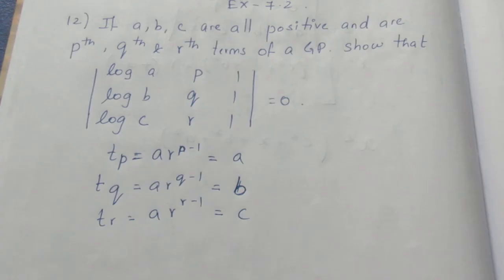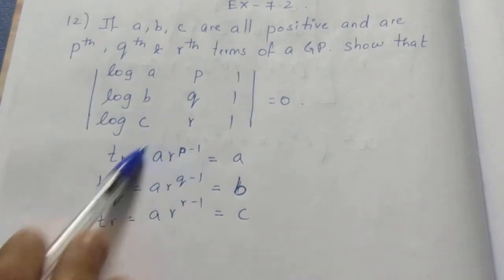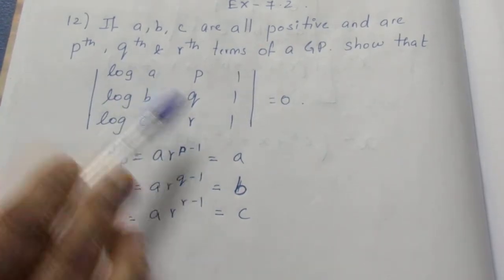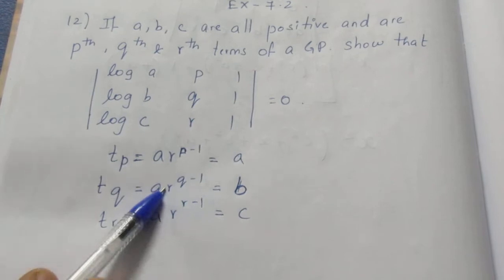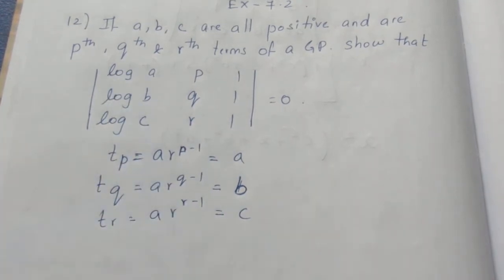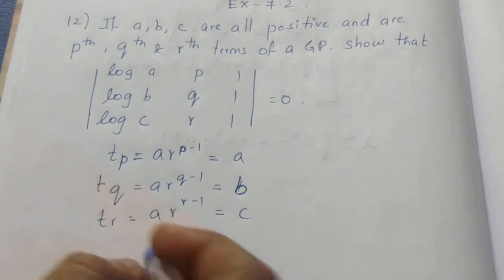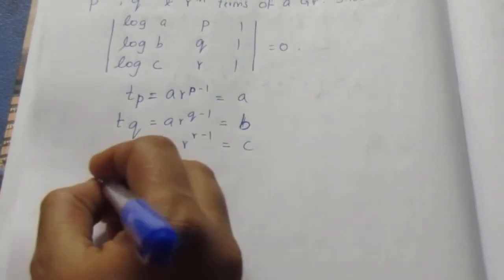Now I am going to substitute these values for A, B, and C, and take the LHS of the determinant.